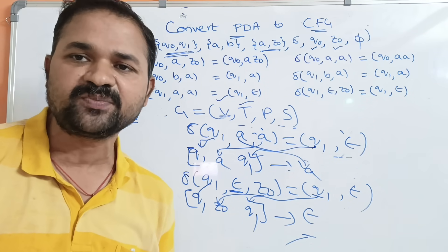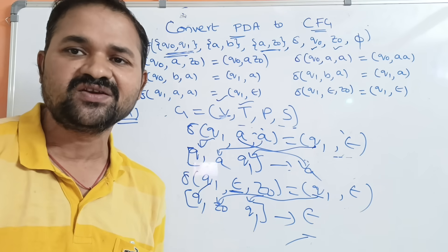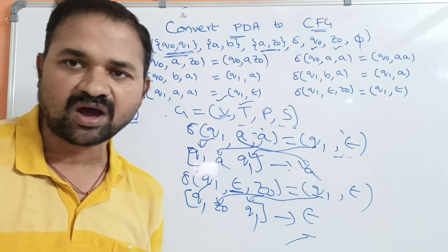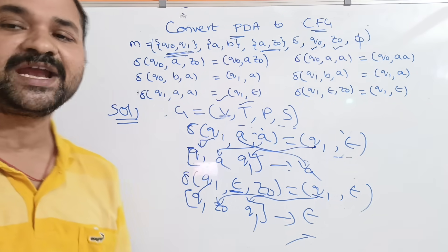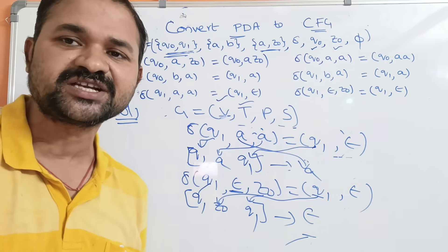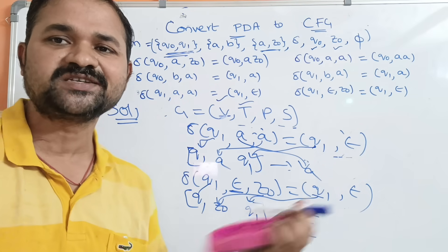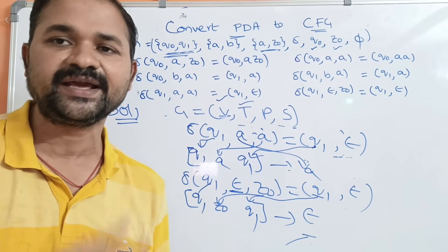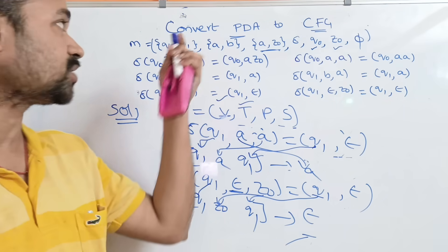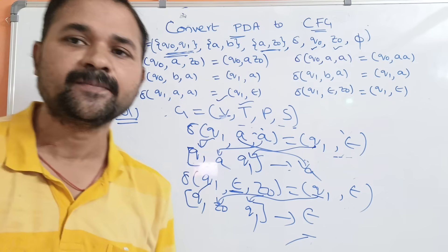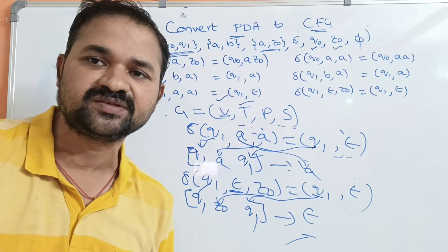So context-free grammar is written with the help of 4 tuples: variables are already written, terminal symbols are A and B, productions are listed, and the start symbol is also written. This is about how to convert PDA to CFG.